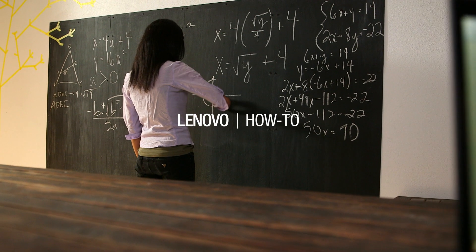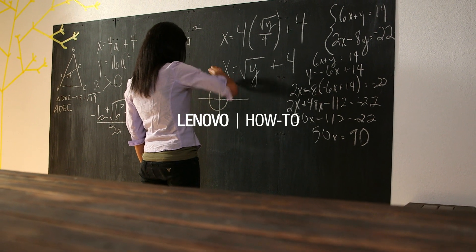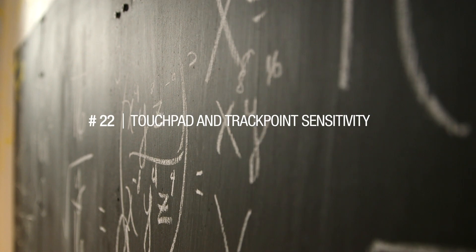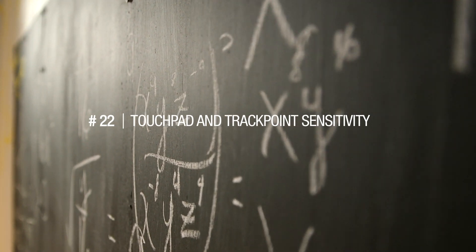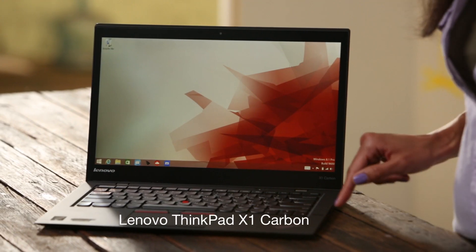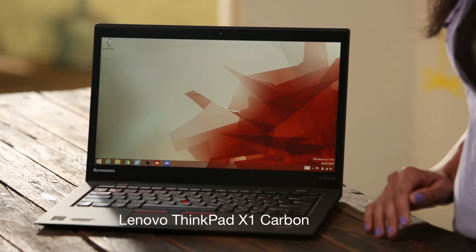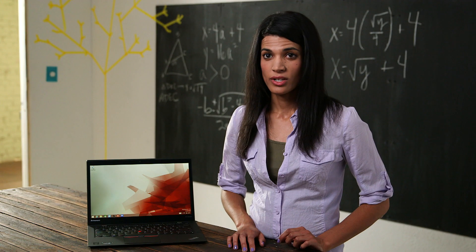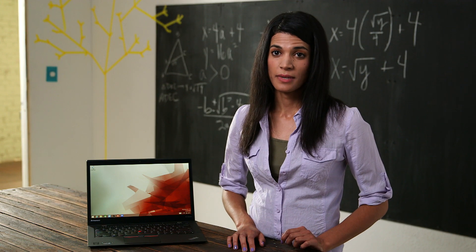I tutor physics, calculus, really all math levels, so geometry, algebra 1, algebra 2. I use computers a lot. This is a Lenovo ThinkPad X1 Carbon and I'm going to be showing you how to change the mouse speed.